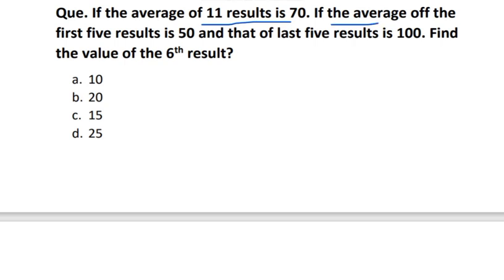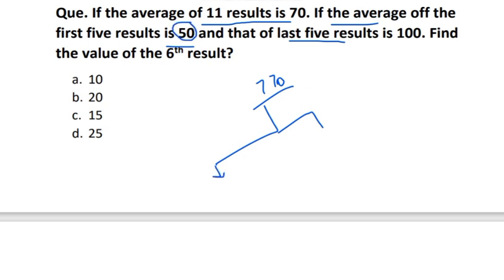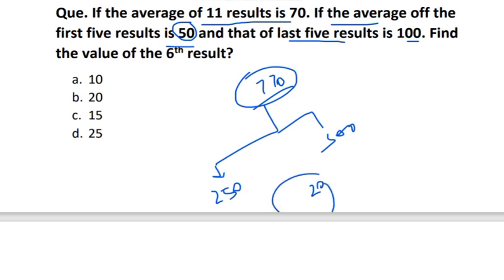Coming to the next question: The average of 11 results is 70, so the total is 770. The average of the first five is 50, meaning their total marks are 250. The average of the last five is 100, so their total is 500. So 500 + 250 = 750. The total is 770, meaning the sixth member has 770 - 750 = 20 marks. The answer is option B - 20.